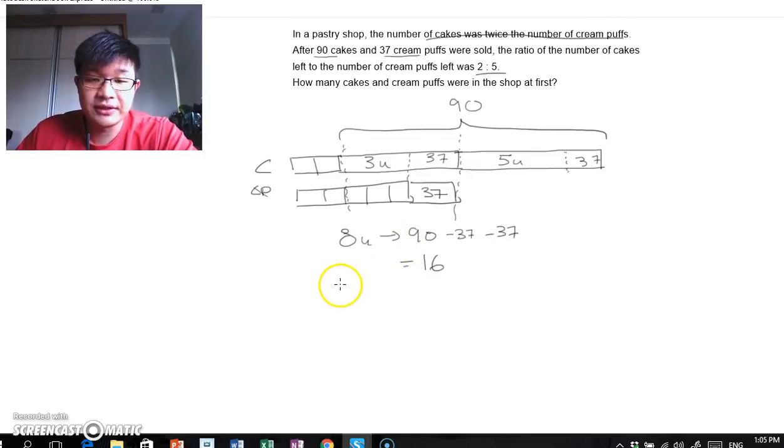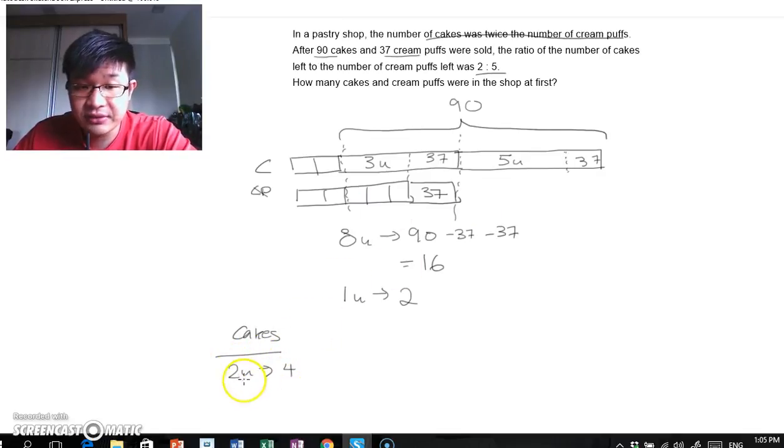So from this point onwards, it's become very automated. So 1 unit would therefore be 2. So how many cream puffs do you have in the shop at first, cakes and cream puffs? Well, cakes would therefore be 2 units. It's actually 4. You just take the 90 that was sold, you add on to the 4. It would be 94. So there were 94 cakes at first.